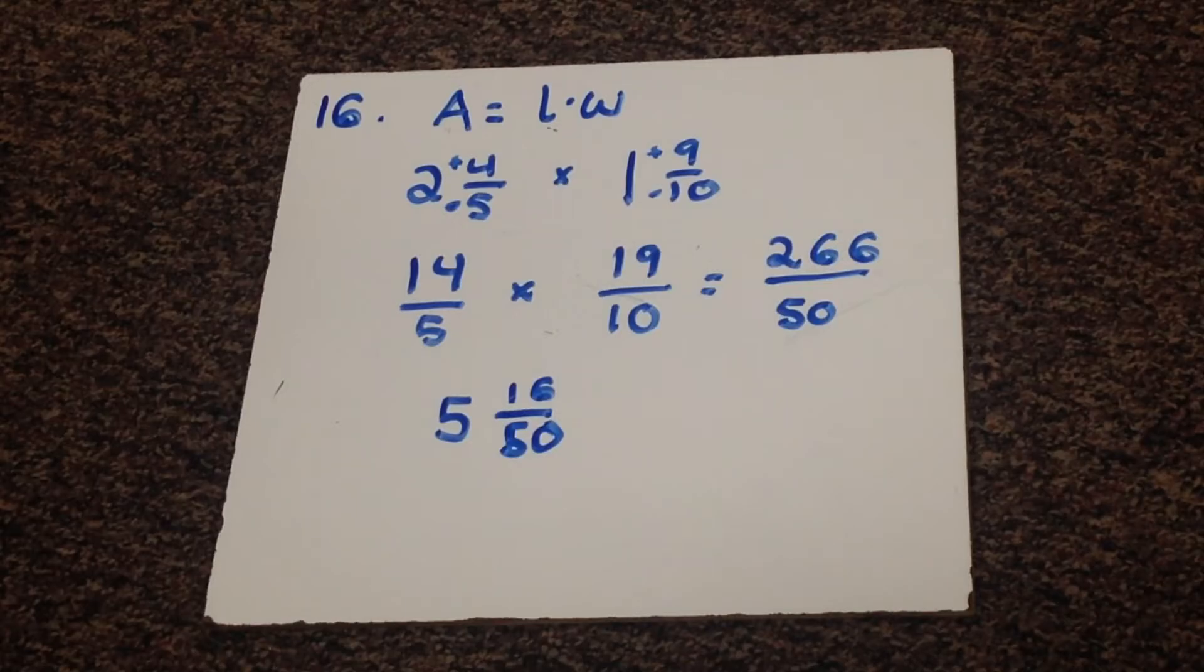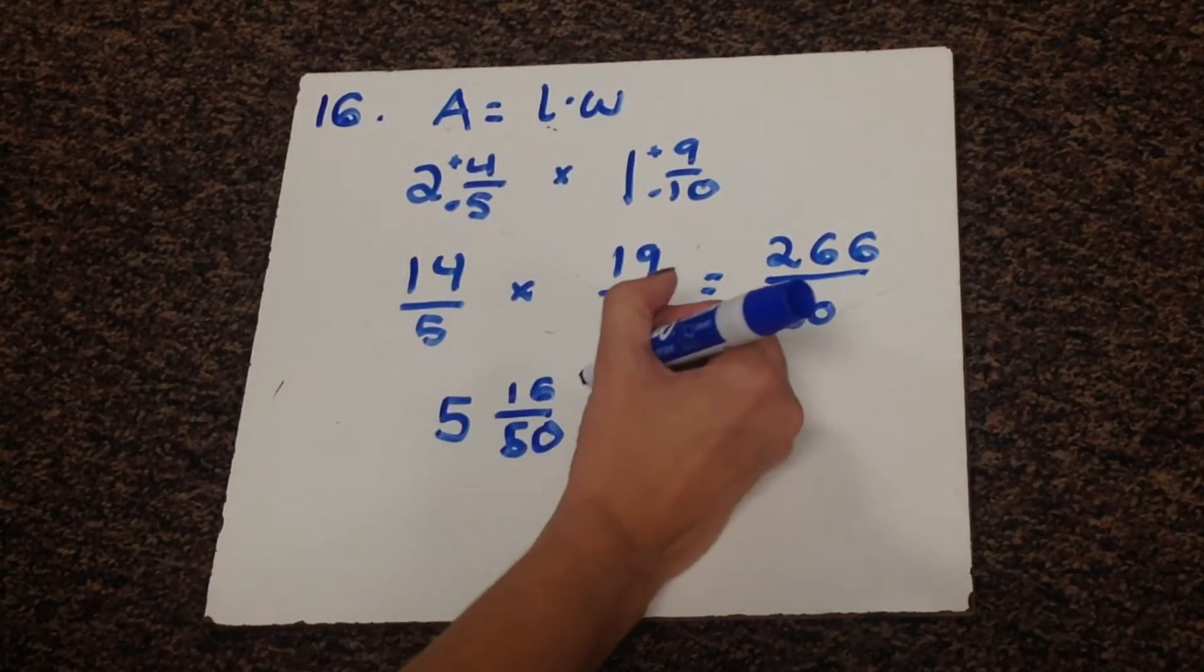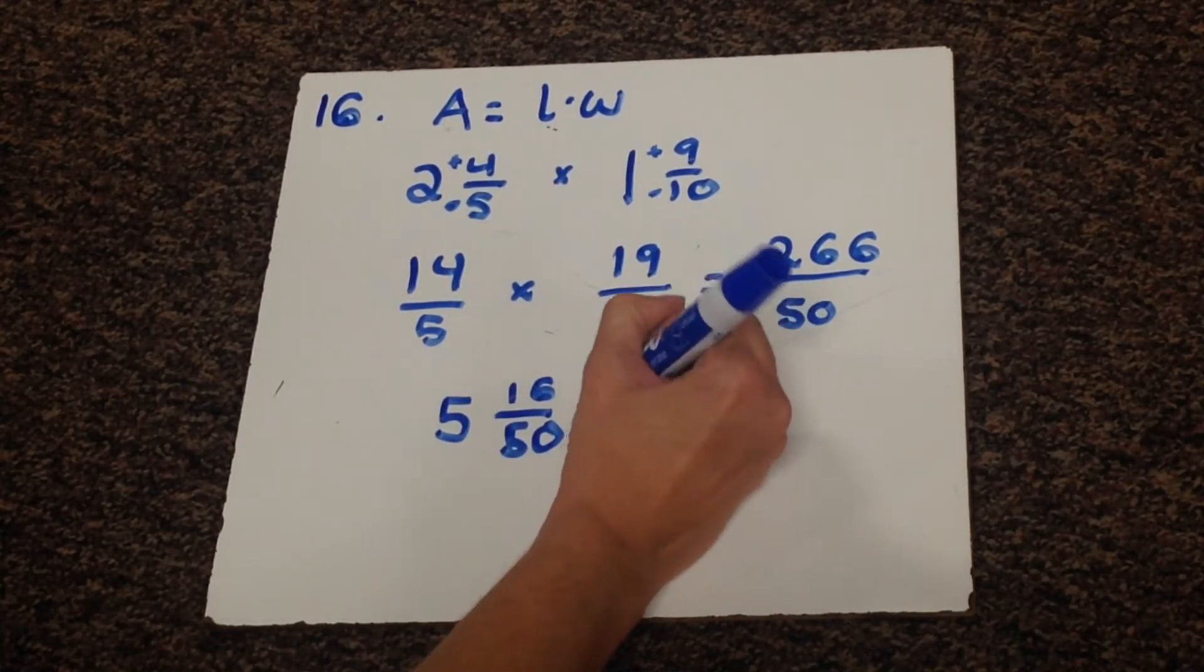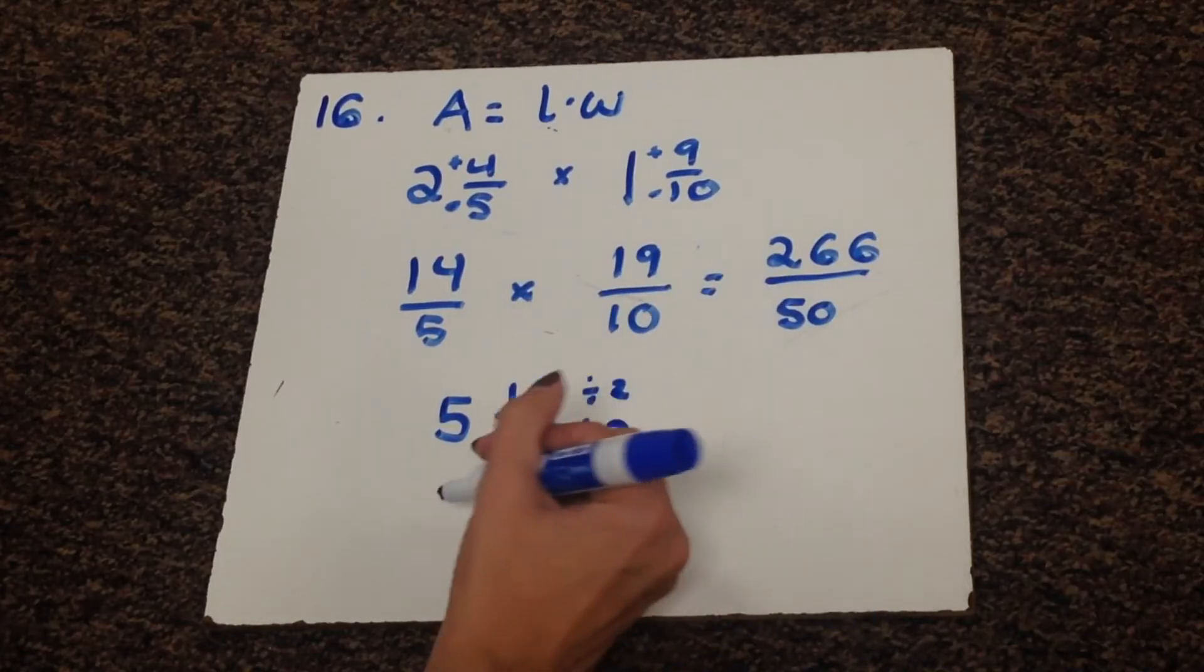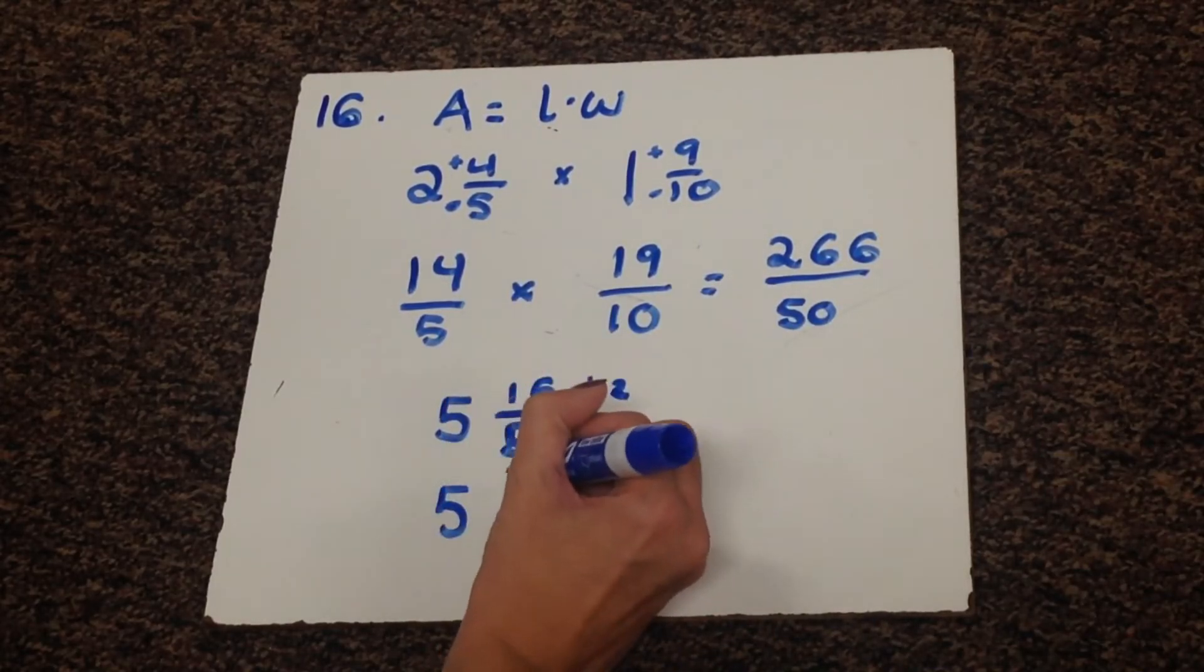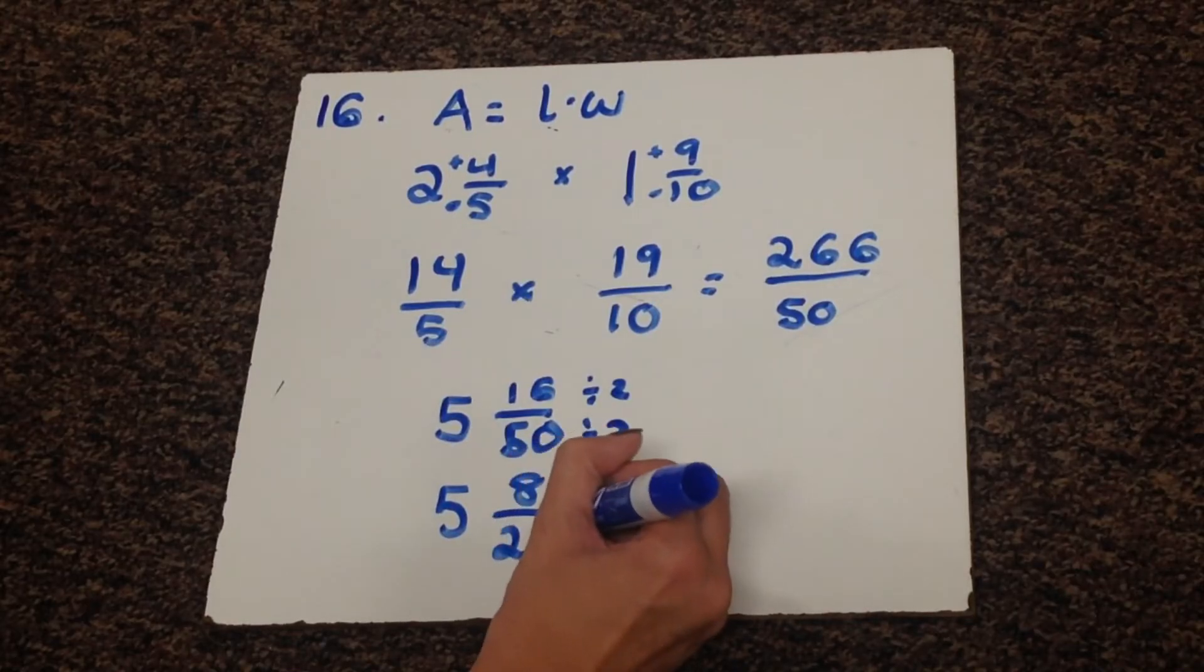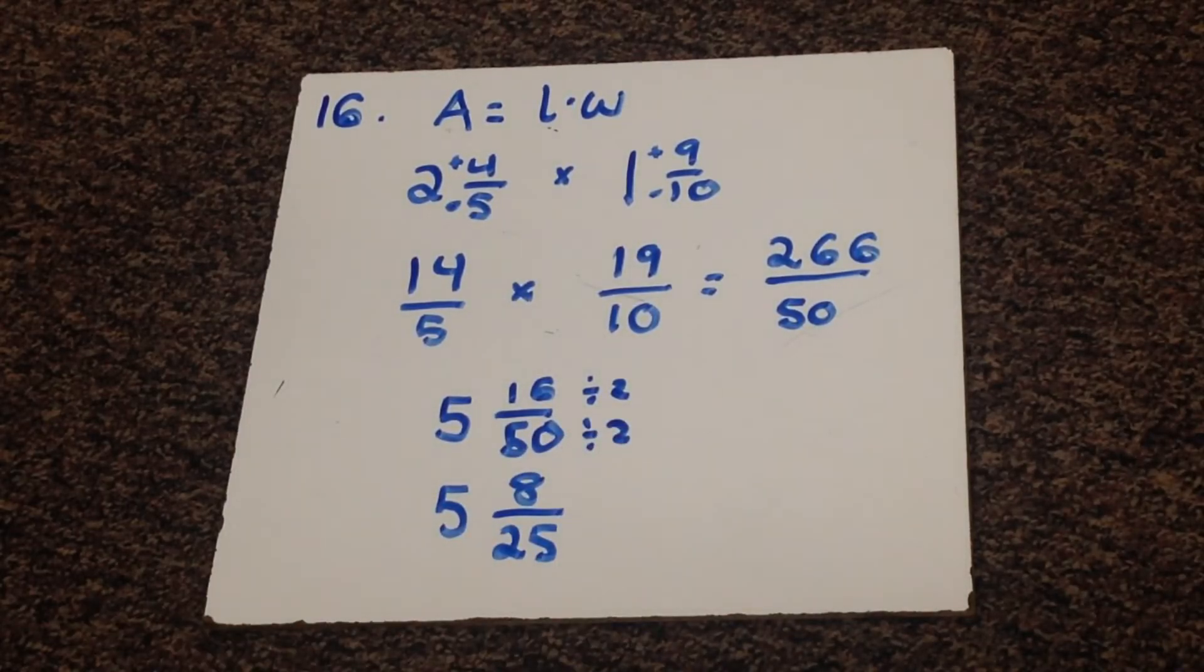Now I need to reduce that 16 over 50. Well, both of those can be divided by 2. So I would have 5. 16 divided by 2 is 8, and 50 divided by 2 is 25. So I would have 5 and 8/25.